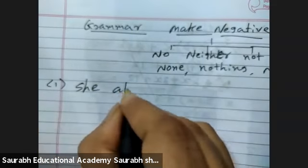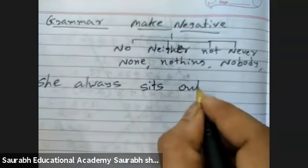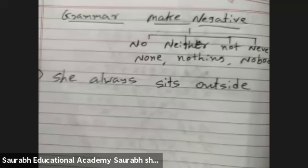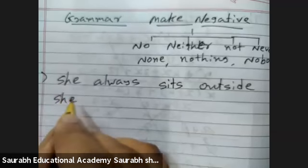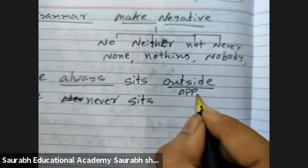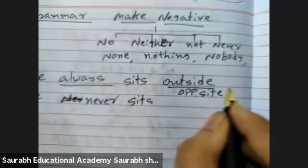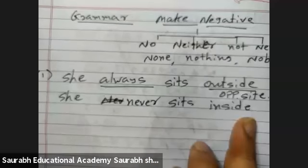She always sits outside. Right? I am making it negative. So: She never sits inside. You have to make the opposite word — outside becomes inside. So she never sits inside. Everyone clear?